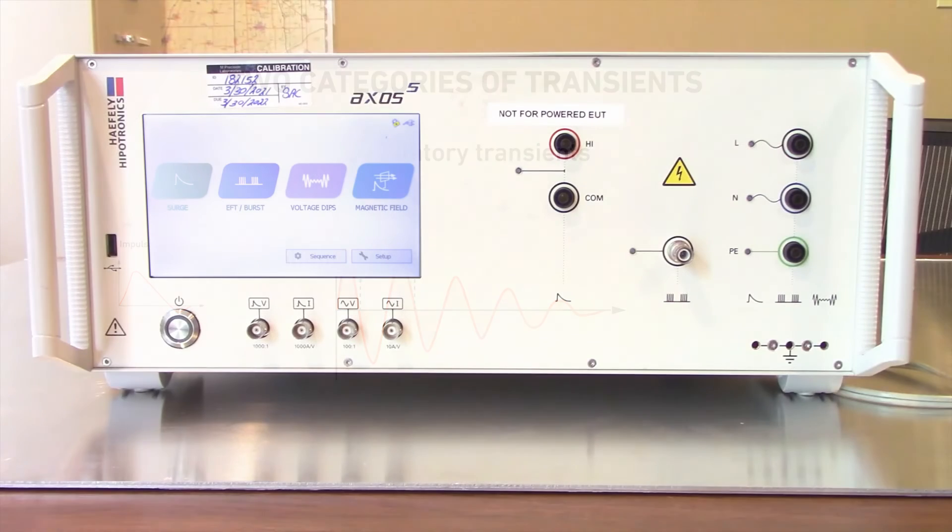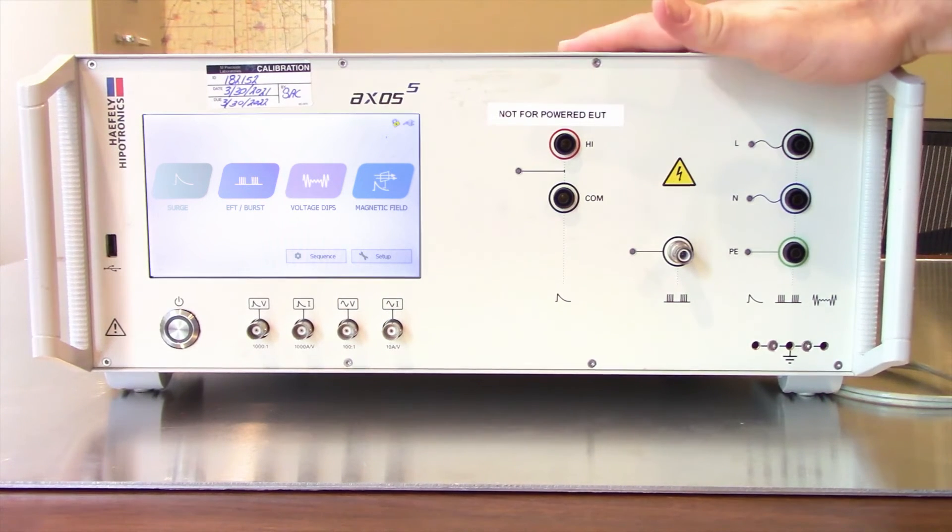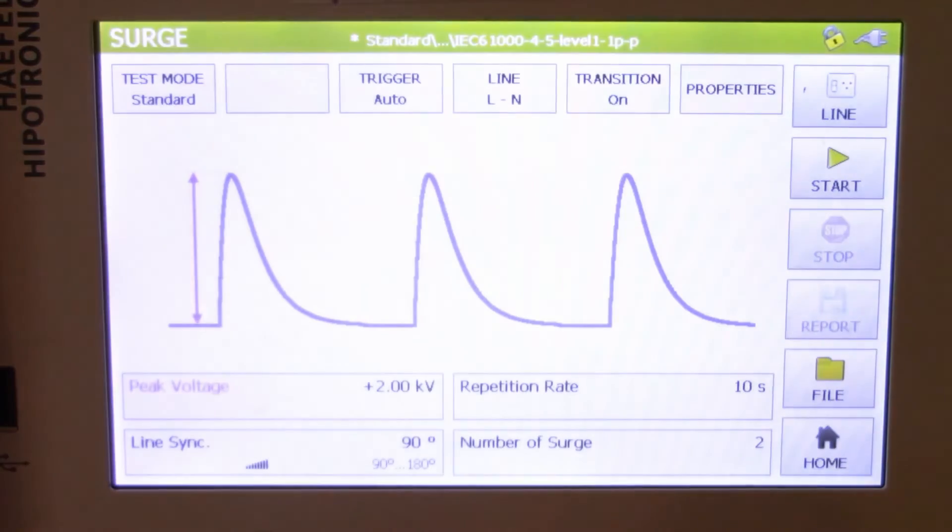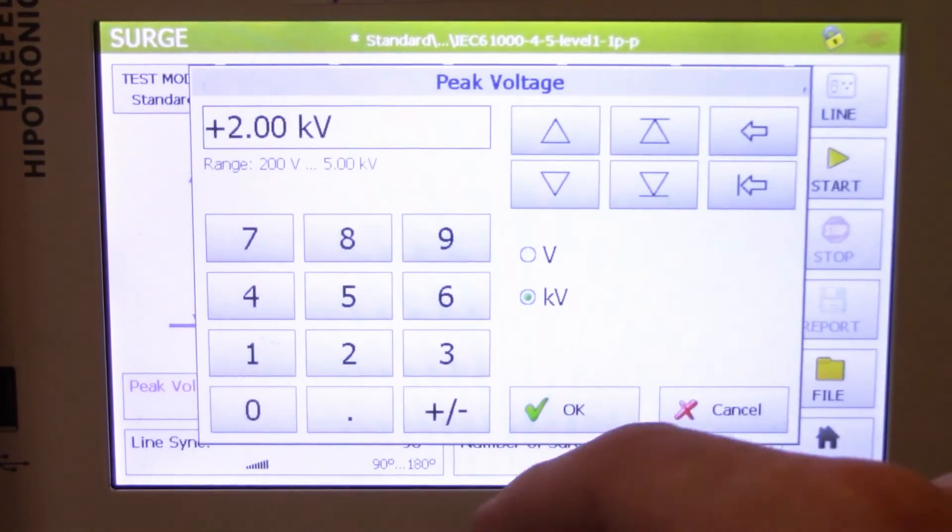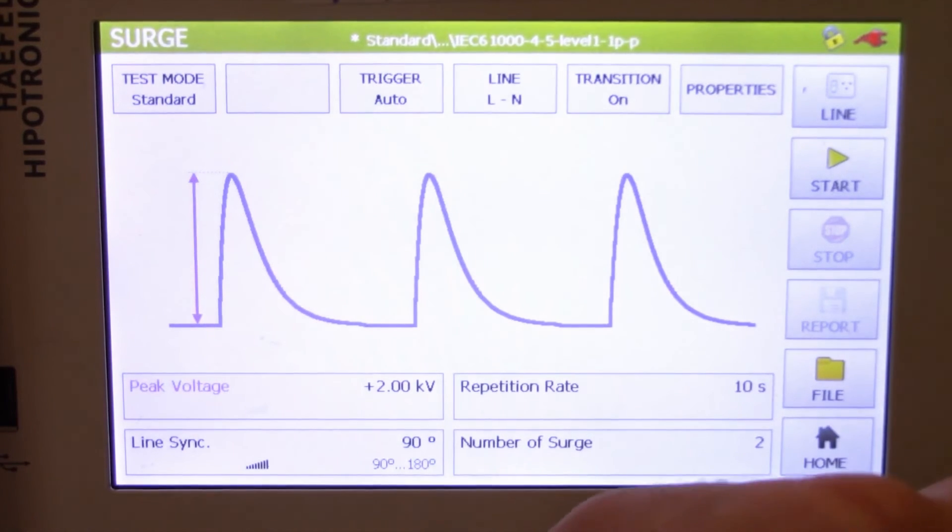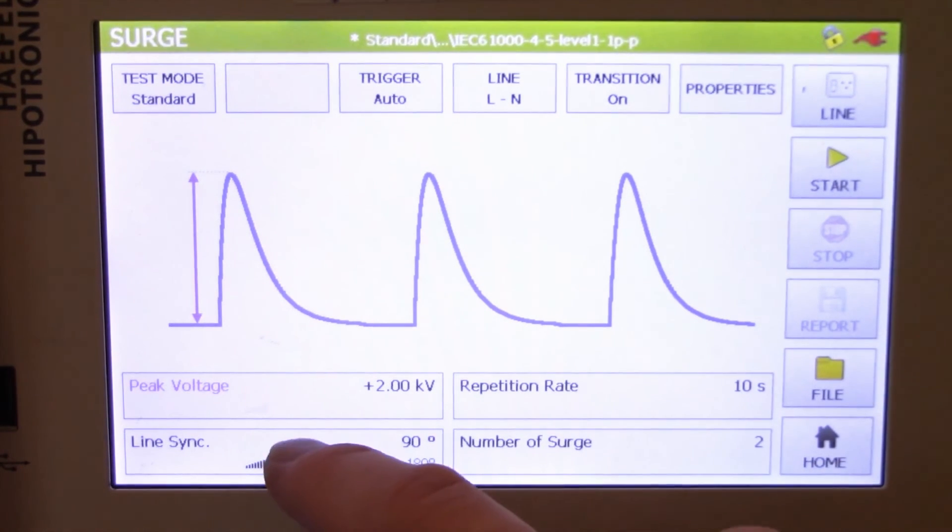Potential impacts caused by the transients can be evaluated using transient generators. These devices replicate a variety of impulse and oscillatory transients. Take a look at the description below to rent transient generators.